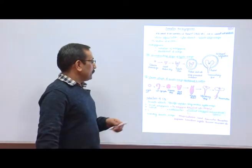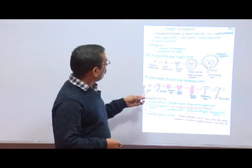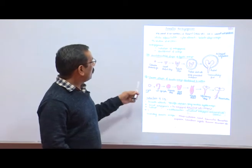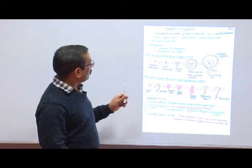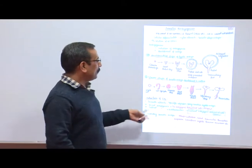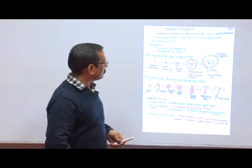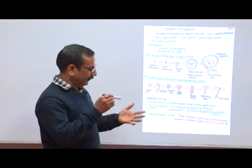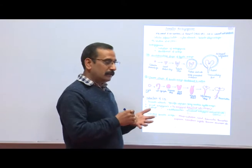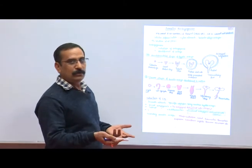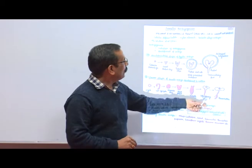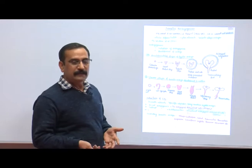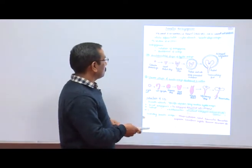In direct somatic embryogenesis and indirect somatic embryogenesis — this is the indirect somatic embryogenesis — we first develop the callus, and the callus undergoes differentiation due to induced embryogenic determined cells. For example, in indirect somatic embryogenesis, if we inoculate the organ to directly develop the embryo, the callus formation stage is not present in direct embryogenesis.